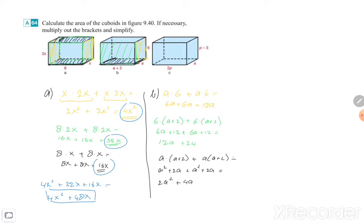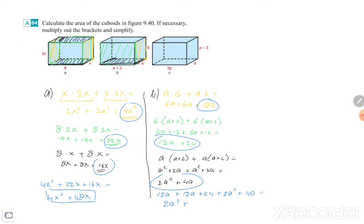Now we add the three answers: 12A plus 12A plus 12A plus 24, plus 2A squared plus 4A. Together it is 2A squared plus 12 plus 12 is 24 plus 4 is 28A, and then plus 24. So that's the answer from exercise B.